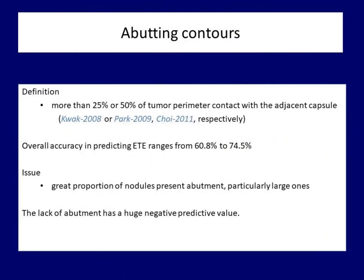The second feature which might suggest extrathyroidal spread is abutment. Abutment means that the nodule is adjacent to the thyroid capsule and is not covered by normal parenchyma. Since a nodule located at the edge of the thyroid is a very common phenomenon, we speak about abutment only if it exceeds a certain value. The perimeter of the abutting part of the nodule has to be compared to the perimeter of the entire nodule. There is no universally accepted degree of abutment which should be held as pathological. The higher the ratio of perimeter contact with the adjacent capsule, the higher the likelihood of extrathyroidal extension. The positive predictive value of abutment is around 50%. Many non-spreading cancers and benign lesions are adjacent to the capsule, while the lack of abutment has a huge negative predictive value.